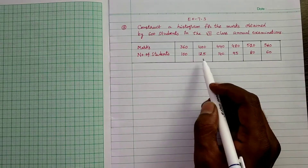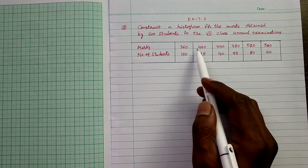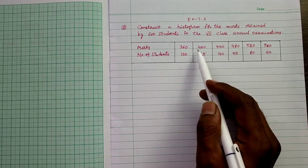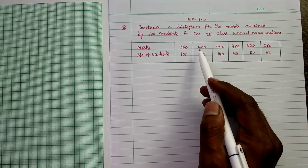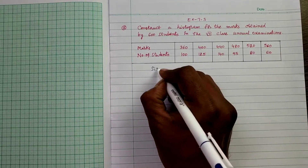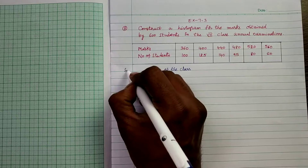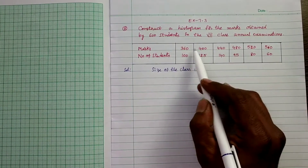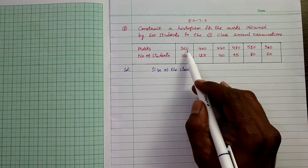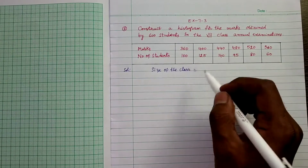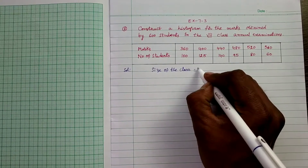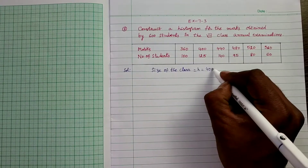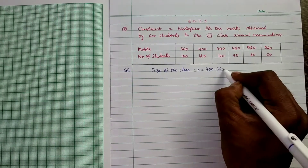First of all, we have to find the size of the class. Here these class marks are given, so by using these class marks we can find the size of the class. The size of the class H equals the difference between any two consecutive class marks. So H = 400 minus 360 = 40.